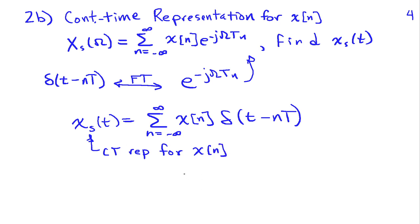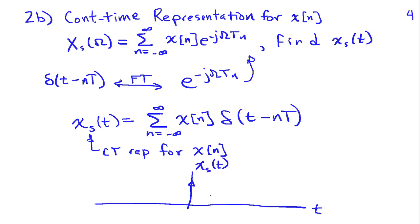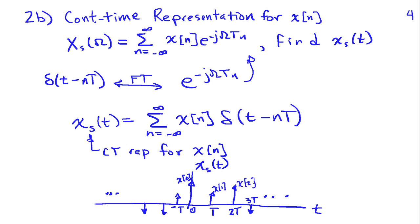We can sketch what that looks like: a sequence of impulses spaced by capital T, at times T, 2T, 3T, 0, minus T, and so on. The strength of each impulse equals the corresponding sample value — x of 0, x of 1, x of 2, x of minus 1, etc. This continuous time representation follows directly from using the frequency relationship and this Fourier transform pair.